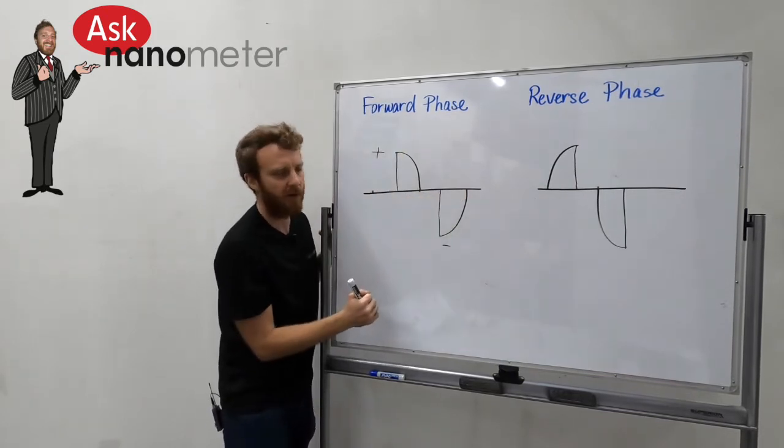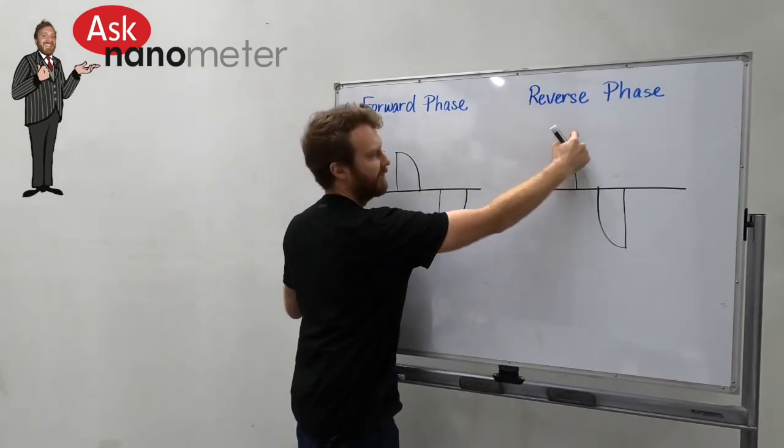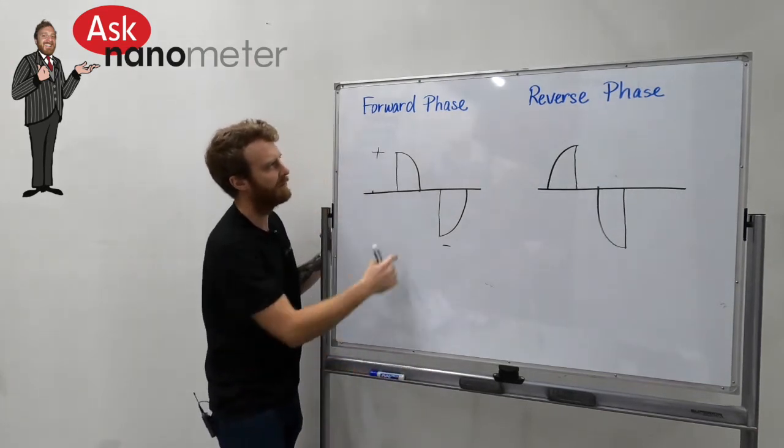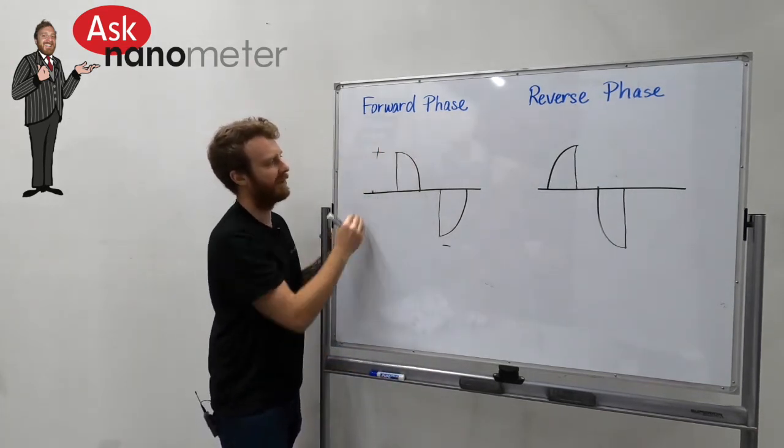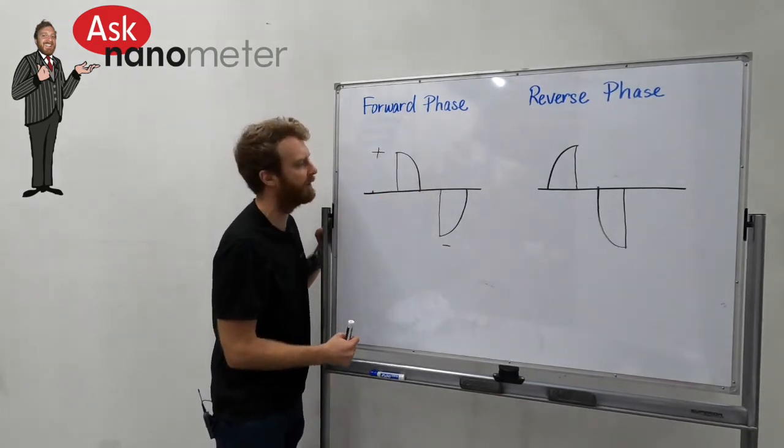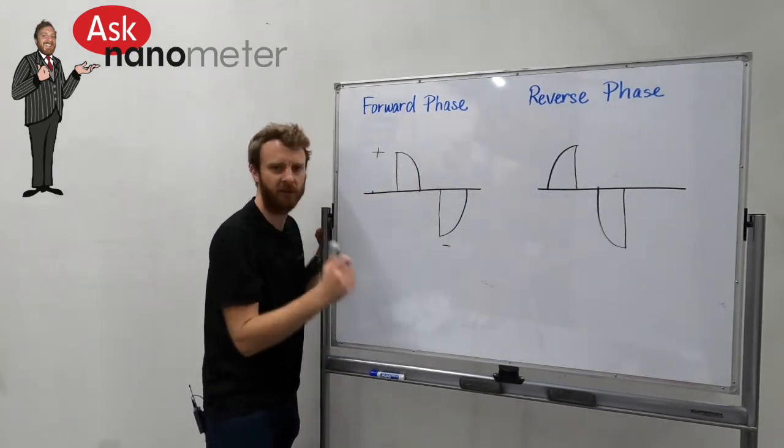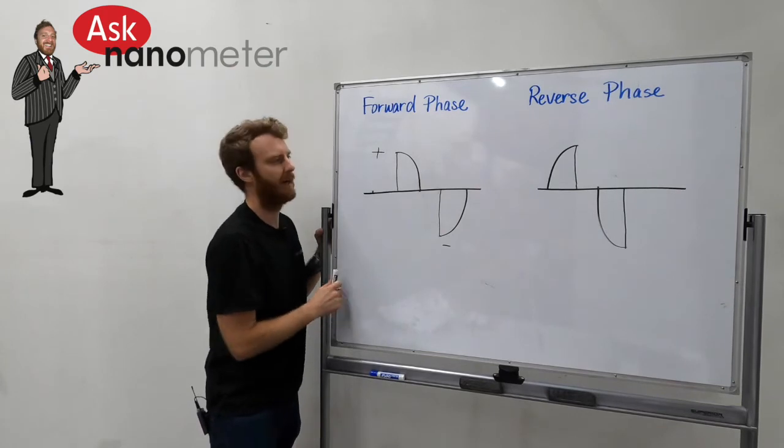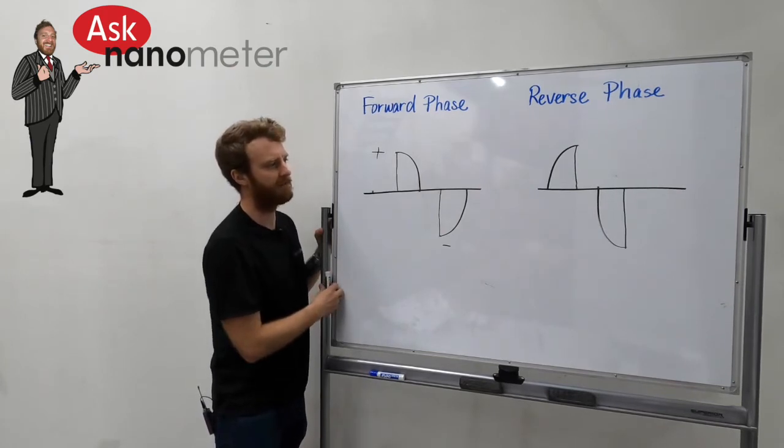The forward phase dimmer is hacking that off and so we have this inrush of maximum current and that over time is just going to kill the driver and make it fail a lot earlier.